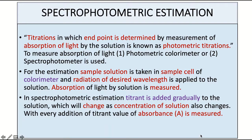This absorbance of the light is measured using a photometric colorimeter or the spectrophotometer. The sample solution is taken into a sample cell of the colorimeter and the radiation of a desired wavelength is applied on the solution. The absorbance of the light takes place by the solution and it is measured. Based on the measured absorbance value we can determine the concentration of the unknown solution placed in the sample cell.